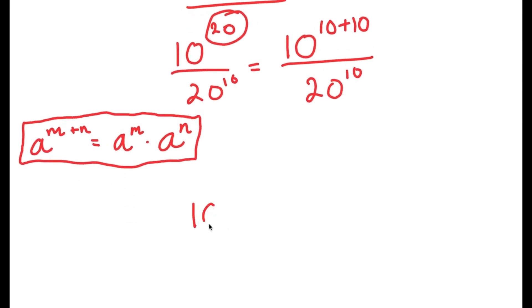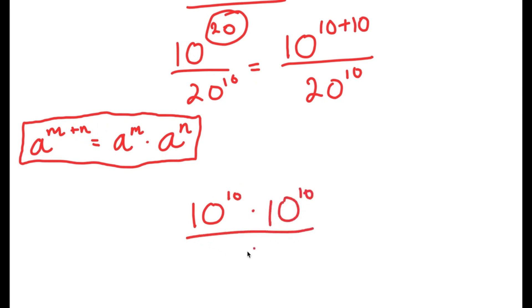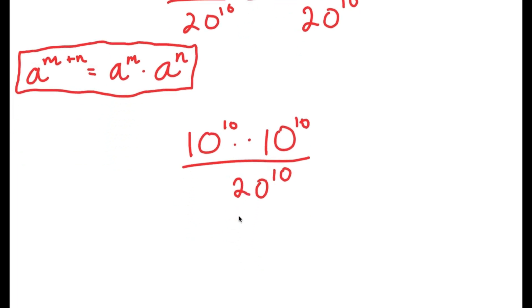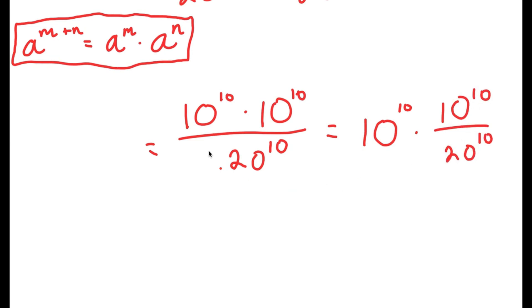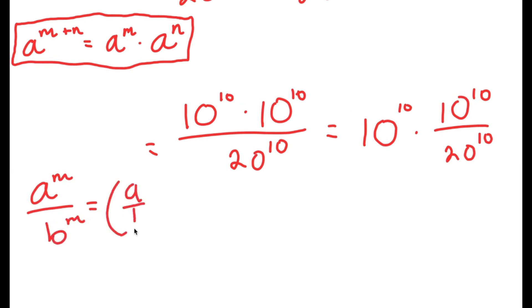So now 10 to the power of 10 plus 10 turns into 10 to the power of 10 times 10 to the power of 10 over 20 to the power of 10. This can be written as 10 to the power of 10 times 10 to the power of 10 over 20 to the power of 10. I just grouped 10 to the power of 10 over 20 to the power of 10, because this way I can use the property a to the power of m over b to the power of m is equal to a over b to the power of m.